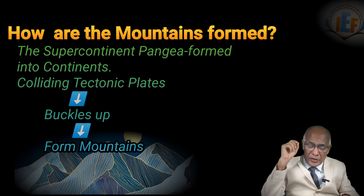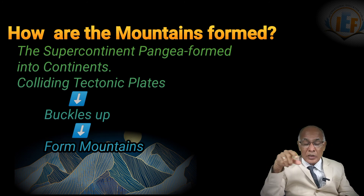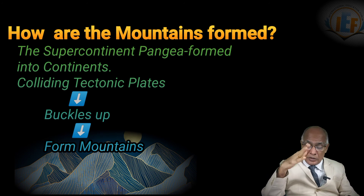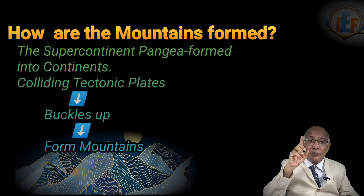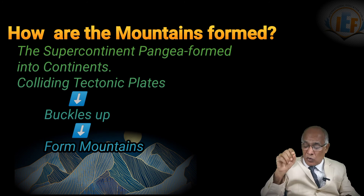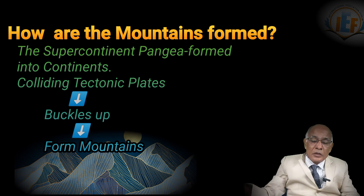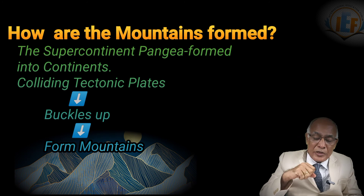The Himalayas are young fold mountains, whereas the Aravali Ranges are the old mountains in our Indian subcontinent. The Caucasus Mountains intersect between Asia and Europe. Mount Elbrus is the highest peak in Europe, with 5,642 meters above sea level. The Caucasus Mountains stretch between the Black Sea and the Caspian Sea.